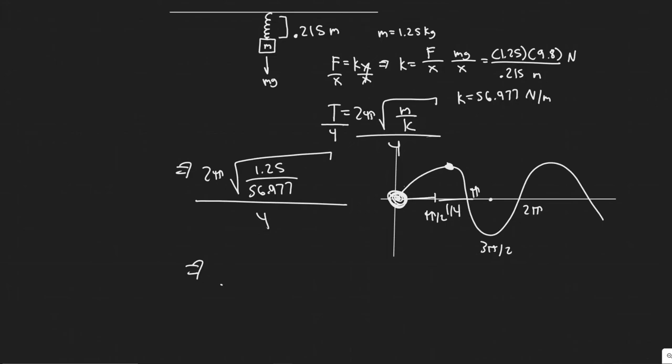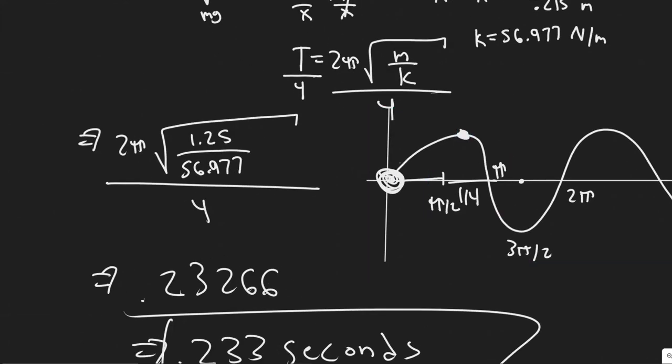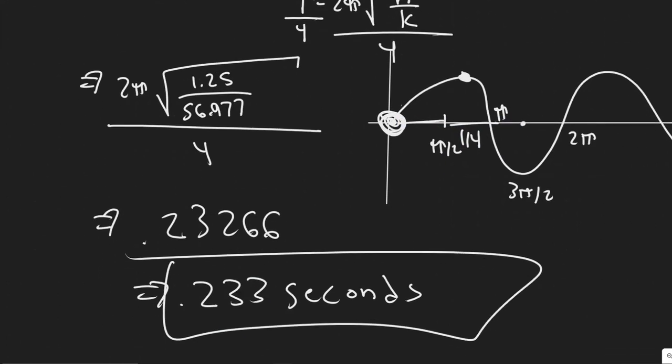So what you get is 0.23266, so it's 0.233. So 0.233, obviously we're dealing with a period, so we're in seconds here. So what they're asking is how long does it take to reach the new equilibrium position again? So from its outstretched point to back to the equilibrium is one-fourth the period, which is 0.233 seconds.